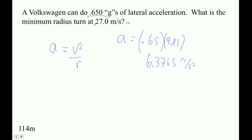And our velocity is 27, right? So if we solve this for r, r is going to be v² divided by a.